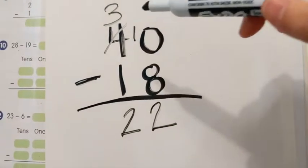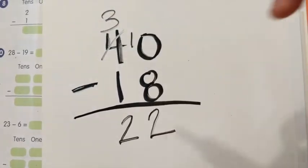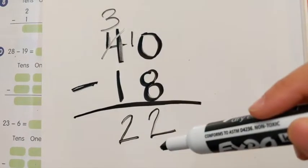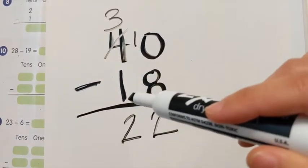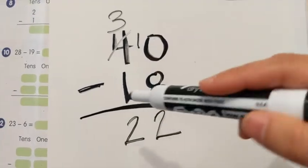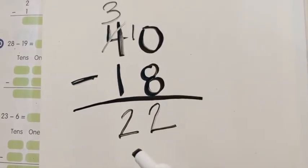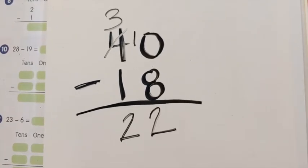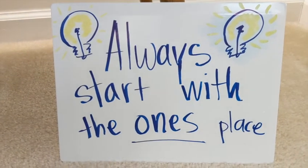Notice that forty take away eighteen — imagine forty eggs and eighteen of them get eaten, we should have less. Eighteen is almost twenty, and forty is like twenty plus twenty. So if you take something that's almost twenty away, you should have something around the twenties left over. I think you're ready to try this on your own. Make sure to talk through it and say the tens place and the ones place out loud, and always start with the ones place.